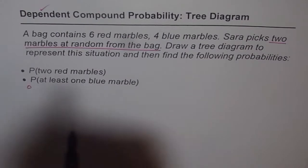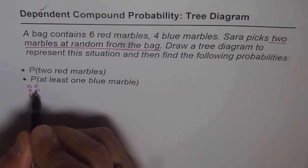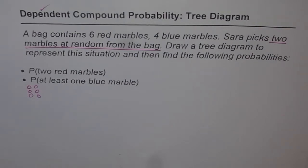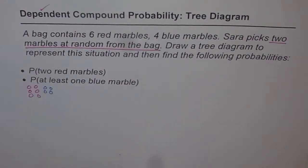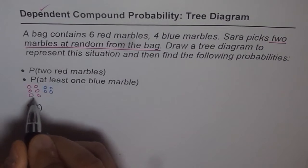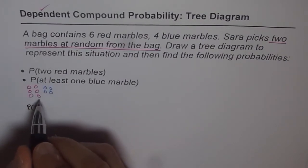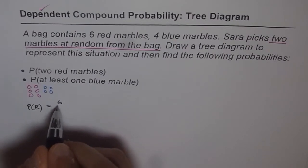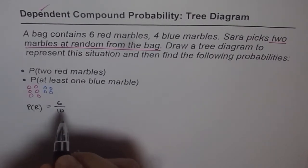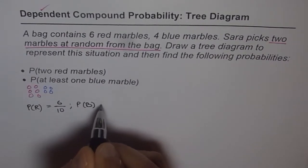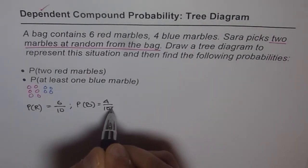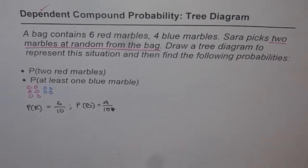Let's draw 6 red marbles and 4 blue marbles. The probability of getting red in the first pick is 6 out of 10, since there are 6 red marbles out of 10 total. The probability of getting blue in the first pick is 4 out of 10, or 0.4.